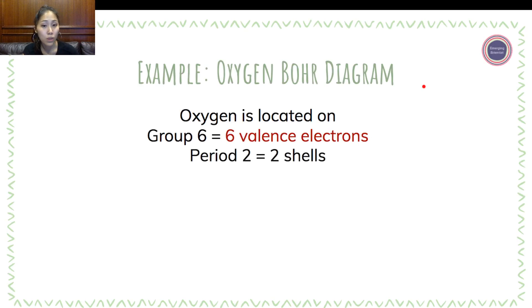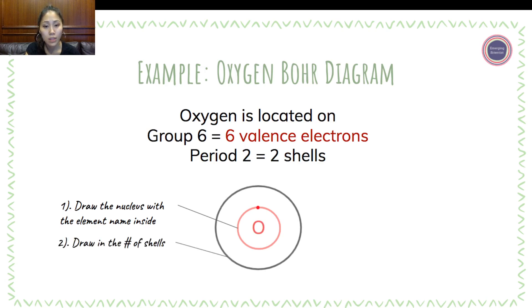Using the four-step method, we first start with drawing the nucleus with the element name inside. So oxygen, the symbol for oxygen is O. We draw a circle around the O to show the nucleus. The second step is to draw the number of shells. We know that it's on period 2, which means that it has a total number of two electron shells.